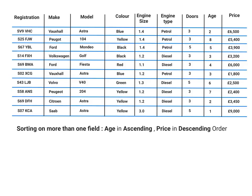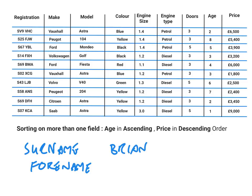Sometimes there will be more than one sort. For example, in a school register it might be on surname first — surname in ascending — and if there are two people with the same surname, then on first name. So Brian Smith would come before John Smith.